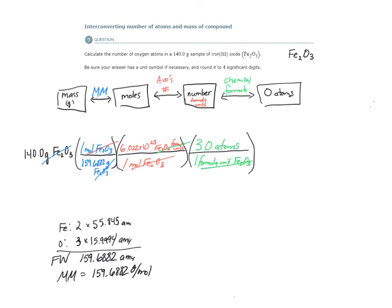That unit cancels and I'm left with oxygen atoms for my unit. So let's do the math. We have 140, open parenthesis, 1 divided by 159.6882, close parenthesis, times 6.022e23 over 1, close parenthesis, times 3 over 1, close parenthesis.